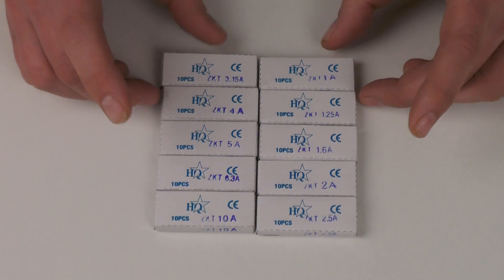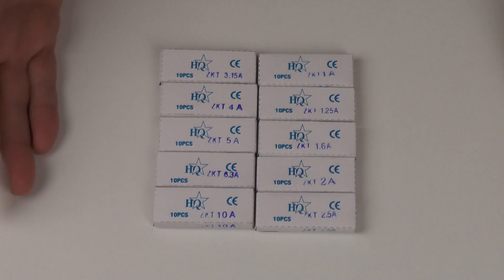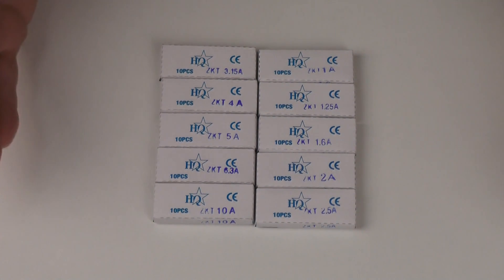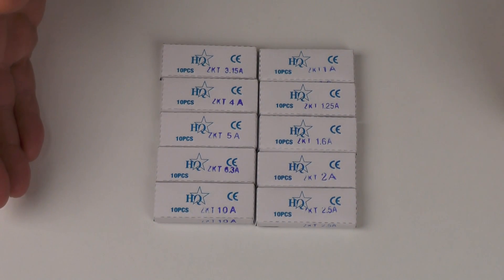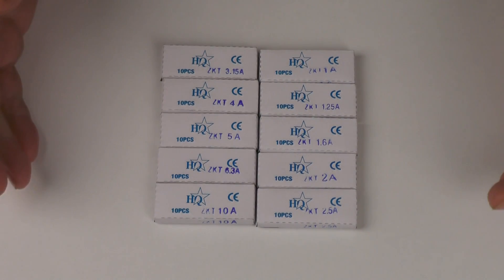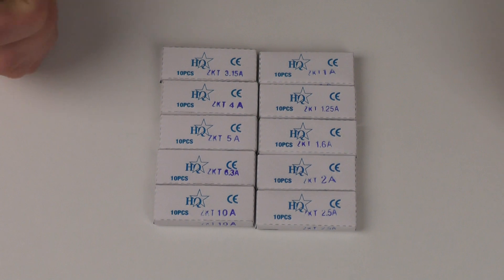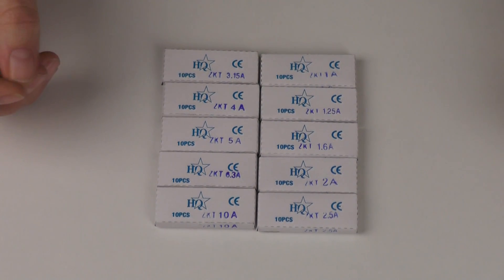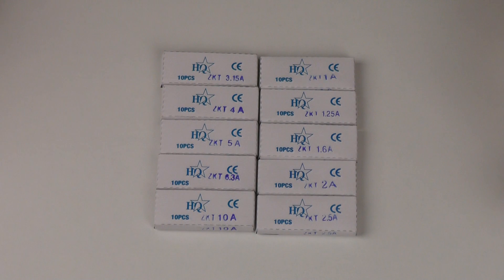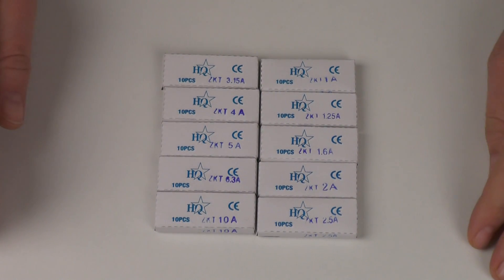So, that's all of the fuses there. 10 packets, 10 values in each packet, 10 fuses in each packet giving a total of 100 20 millimeter by 5 millimeter delay fuses. Thank you for watching this demonstration.